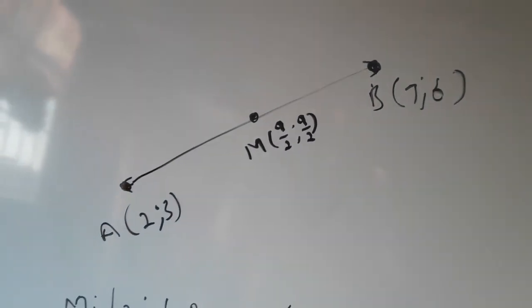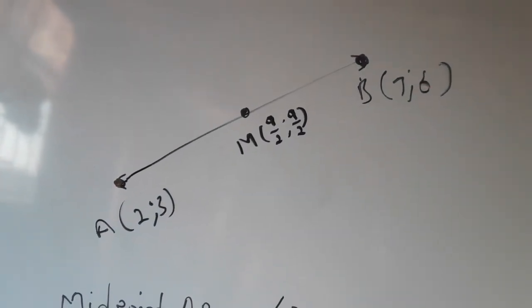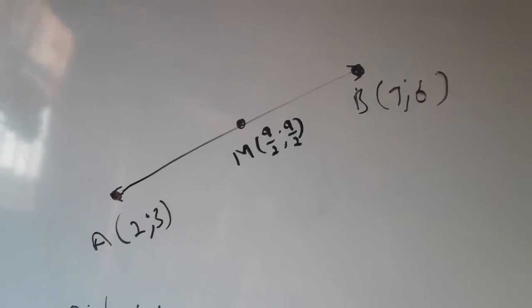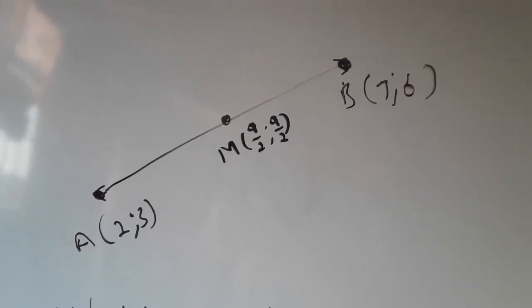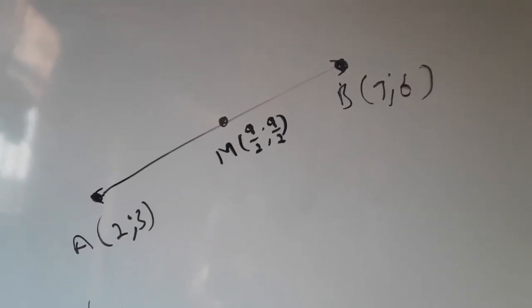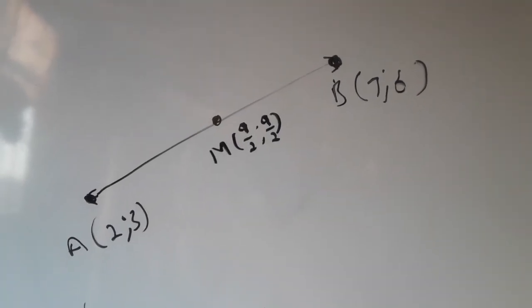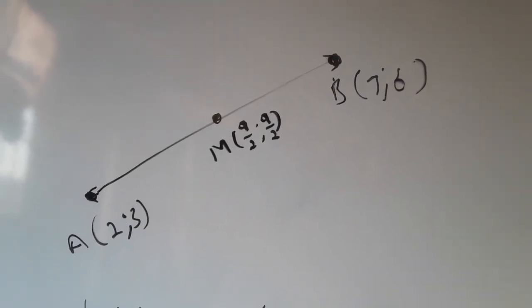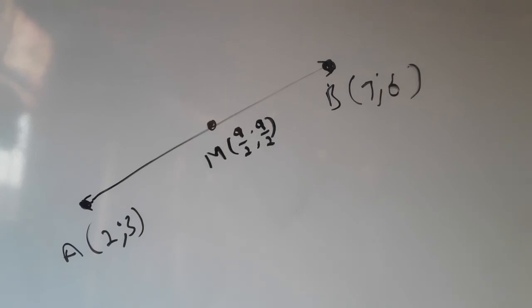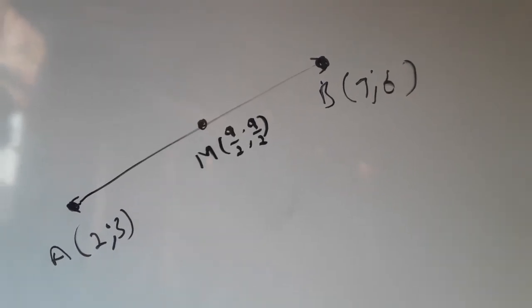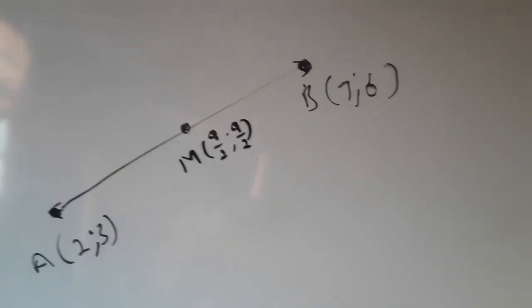Therefore, we have determined the midpoint of this line. It's 9 over 2, which is about 4 and a half. Thank you very much for your time. Don't forget to subscribe to Online Education Academy for more learning content.